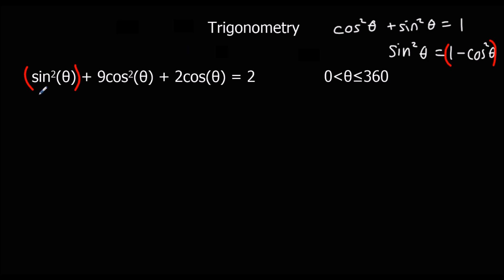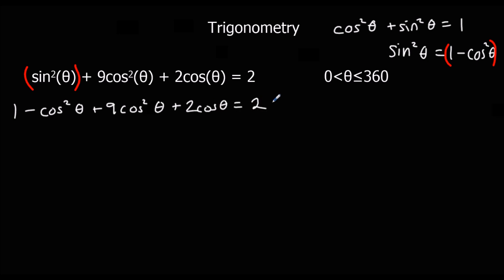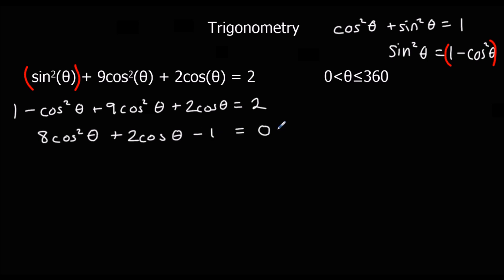Substituting sin²θ = 1 − cos²θ gives us (1 − cos²θ) + 9cos²θ + 2cosθ = 2. Collecting like terms: −cos²θ + 9cos²θ = 8cos²θ. Then subtracting 2 from both sides gives 8cos²θ + 2cosθ − 1 = 0.